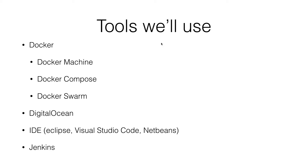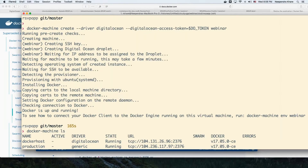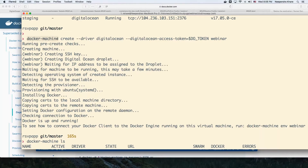First of all, we're going to use Docker. Specifically, we are going to use Docker Machine, using which we can provision a VM instance on the cloud, have Docker installed on it, and then manage it. On the screen, I've used the Docker Machine tool instructing it to go and create a VM instance on DigitalOcean, using the DigitalOcean driver, providing my API token and giving a VM name 'webinar'.